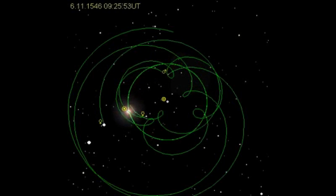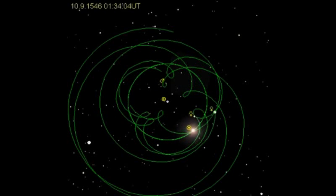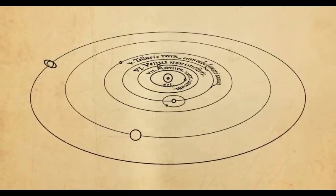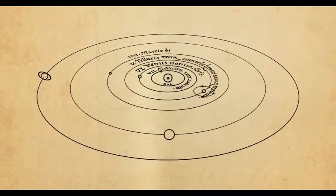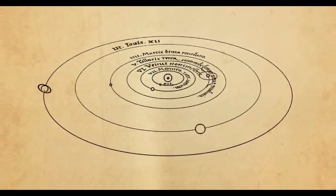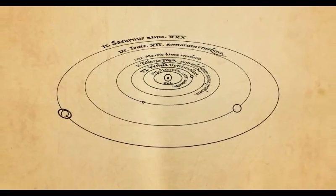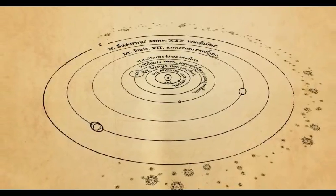Most notably, the apparent retrograde motions of the planets. Copernicus solved that problem by realizing that the sun is the center of the system, not the Earth. And the heliocentric model still works to this day to perfectly explain all observations, measurements, and experiments.